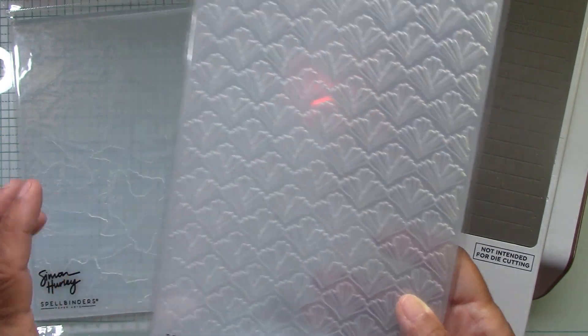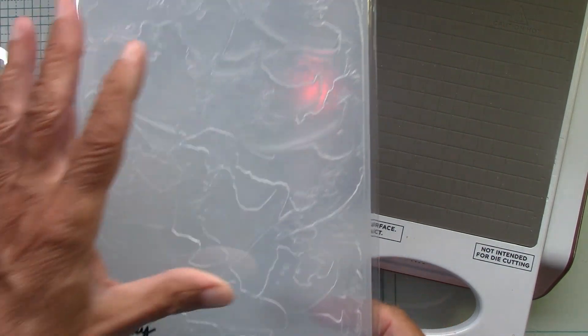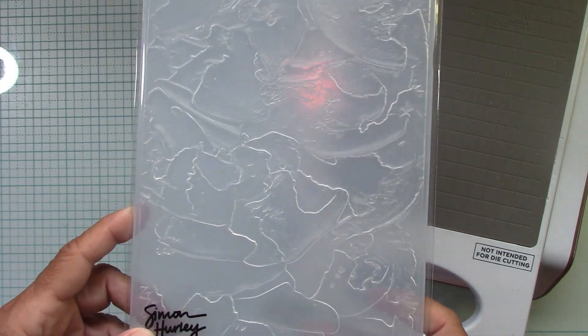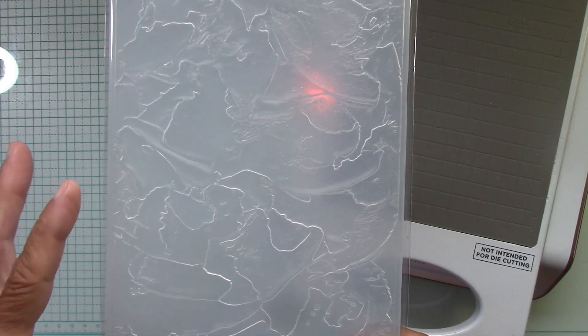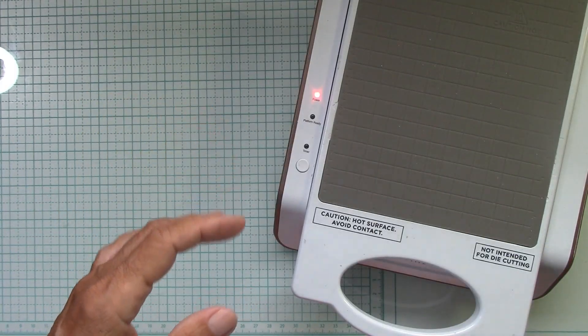Then he came up with this plaster one. It's supposed to look like icing, it does look like plaster. Again, a fantastic background embossing folder. I'm excited about it.